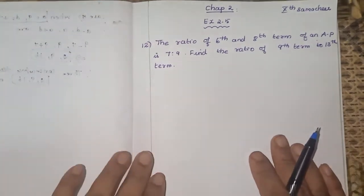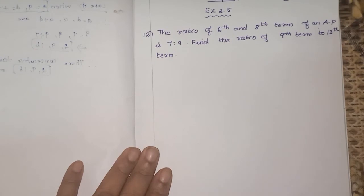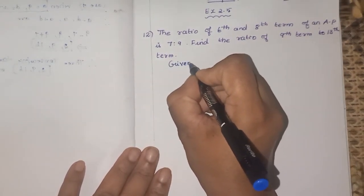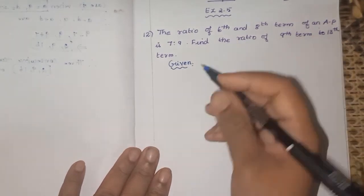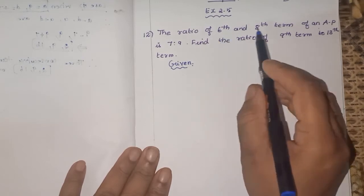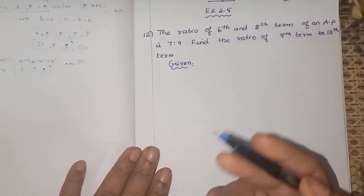So first, what we can conclude from the given data. First you have to write given, anything we have, we can get it from given data. You have to check it. So what is given only, we can take something. So what is the ratio of 6th term and 8th term, how will you write the ratio?